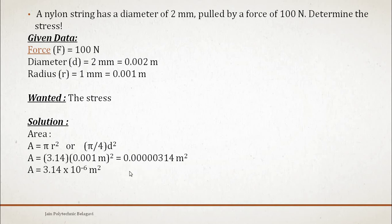It is correct, 3.14 × 10⁻⁶ m², so you can write this in decimals as 0.00000314 m².